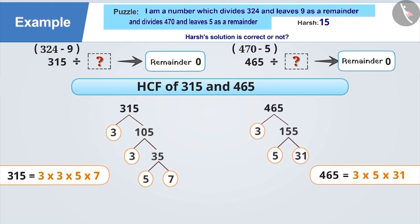Both 315 and 465 have 3 and 5 as factors. Hence, the HCF of 315 and 465 is 3 × 5 which is 15.